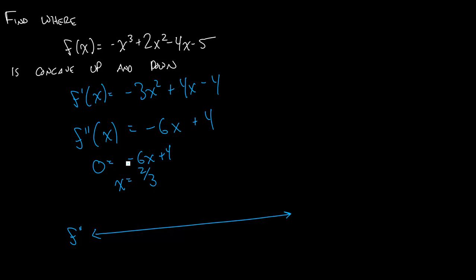If you move the 4 over there and divide by negative 6, you'll get 2 thirds. So there's one spot where it is equal to zero at 2 thirds.